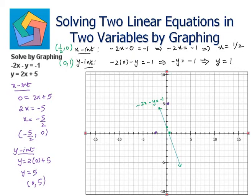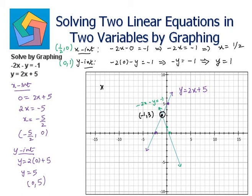Joining these two points gives the graph of the line y is equal to 2x plus 5. These lines are intersecting at the point (−1, 3), so x is negative 1 and y is 3 is the solution of these two equations.